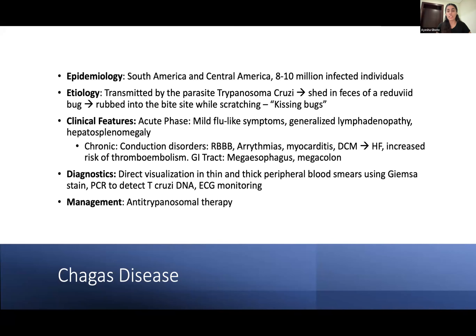Chagas disease can be diagnosed through direct visualization on thin and thick peripheral blood smear using Giemsa stain, or by PCR to detect T. cruzi DNA. ECG monitoring is crucial for conduction abnormalities and arrhythmias. In the acute phase, patients can be treated with anti-trypanosomal therapy such as benznidazole — though this is only useful in the acute phase. For GI manifestations in the chronic phase, laxatives and increased fluids can help with megaesophagus and megacolon.